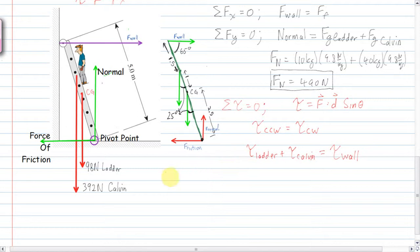Now we write out each torque. The torque of the ladder is force times distance times sine of the angle. The force is 10 times 9.8, so 98 Newtons, times the distance of 2.5 meters, times the sine of 25 degrees.